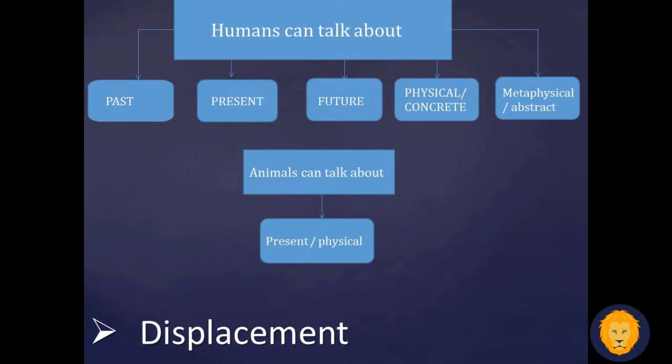On the other hand, animals can only talk about what they interact with in their environment. For example, if a monkey sees a danger — let's say a snake is going to attack them — he is going to produce some sounds to communicate and warn the other monkeys to flee and run. So animals can only use language to describe what they interact with: something in the present and something that they can touch.